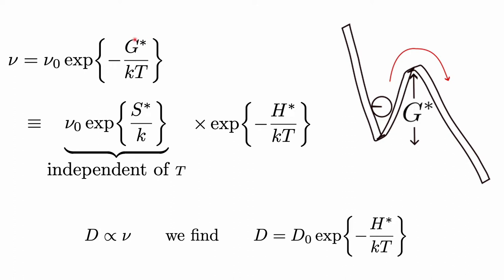Since G* is a free energy, we can separate it into an activation entropy term and an activation enthalpy term H*. The entropy term is independent of temperature, so we identify that as D₀ in our diffusion equation. The diffusion coefficient, which is proportional to the successful jump frequency, is then D₀ multiplied by exp(−H*/kT). This is the general form of the diffusion coefficient: a temperature-independent constant D₀ multiplied by an exponential that depends on temperature through the activation enthalpy H*.